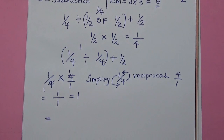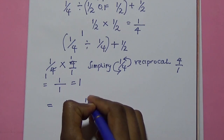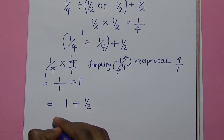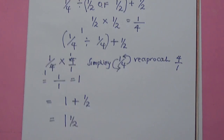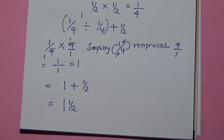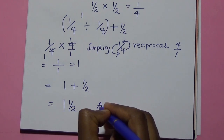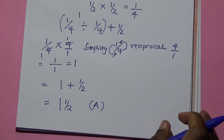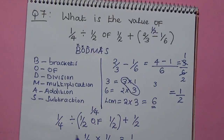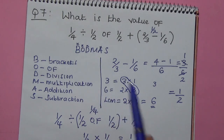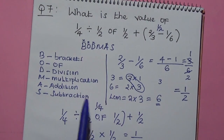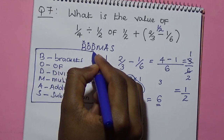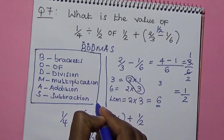So what we have now is 1 plus a half, which equals 1 and a half. Therefore, the correct answer is A. That is how you go about when you are given such a problem. The question is testing whether you know how to apply BODMAS. Write down the meaning of BODMAS, as the marks are between this and the solution. Thank you.